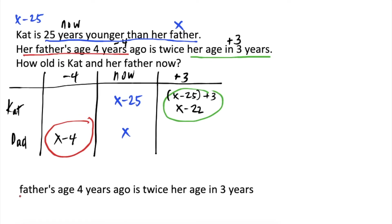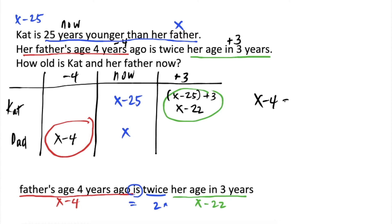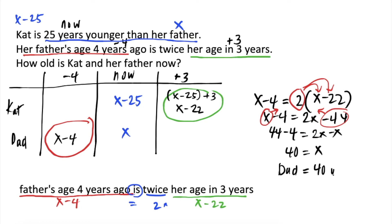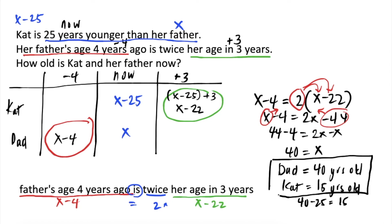Now, let's convert this statement into an equation form. Father's age 4 years ago, which is x minus 4. Her age in 3 years, which is x minus 22. Since father's age 4 years ago is equal to twice her age in 3 years, imumultiplyin natin ang x minus 22 by 2. So, we will have this equation: x minus 4 is equal to 2 times x minus 22. I-distribute natin ang 2, we will get x minus 4 is equal to 2x minus 44. Ilipat natin ang x and ang negative 44 — we will get 44 minus 4 is equal to 2x minus x. Simplifying this, we will have 40 is equal to x, which is yung age ng dad. How old is Kat? That's x minus 25, or 40 minus 25, which is equal to 15 years old. This is our final answer.